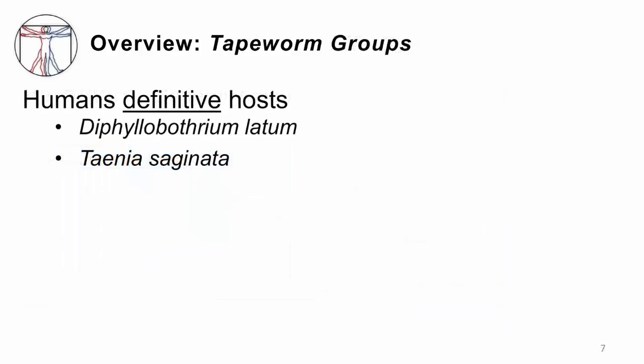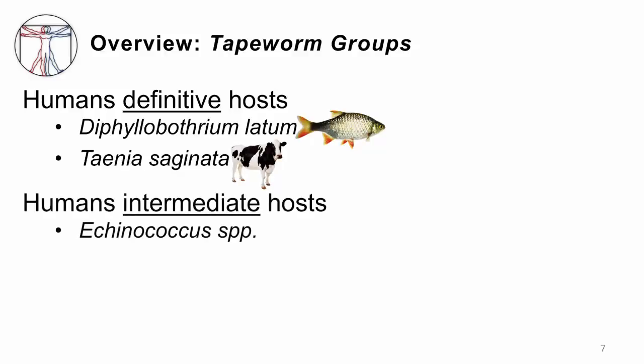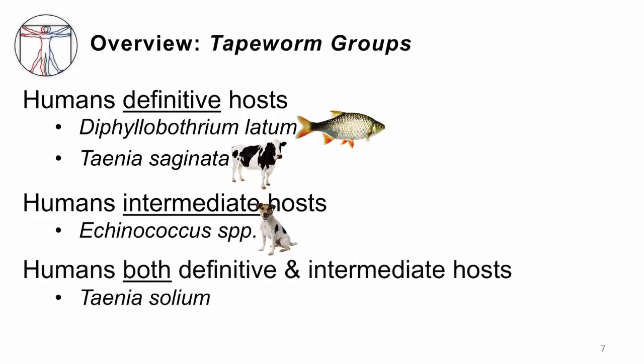Humans can be the definitive host of Diphyllobothrium latum and Taenia saginata. D. latum is the fish tapeworm; T. saginata is the beef tapeworm. We can be the intermediate host of Echinococcus, the dog tapeworm, and we can be both definitive and intermediate host for T. solium, the pig tapeworm.